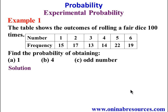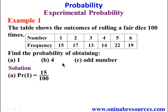In the solution, we start with the probability of obtaining 1. In the table, 1 appears 15 times out of the 100 times, so we have the probability to be 15 over 100, since the total number of times for rolling the dice is 100. Simplifying this to the simplest form, we have it as 3 over 20. That's that for problem 1A.